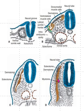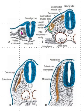The myotome divides and forms the body wall muscles and limb muscles, and the sclerotome forms the vertebral column. So this is the fate of the somite. The somite is part of the mesoderm — specifically the paraxial mesoderm — and a small portion of the paraxial mesoderm is known as the somite.